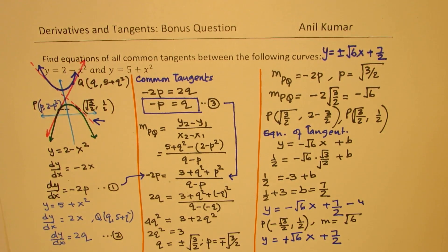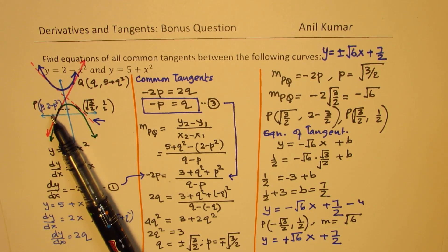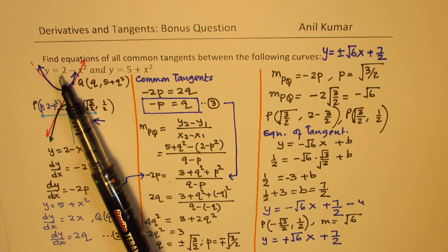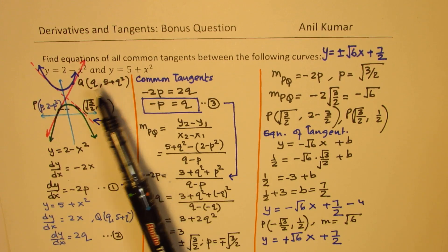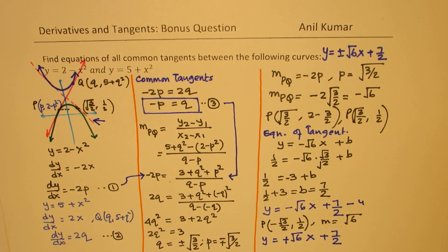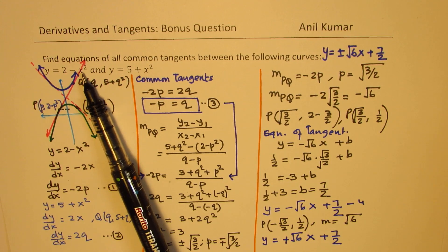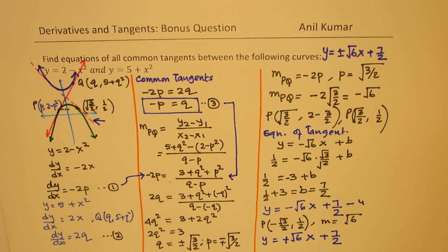That is how you solve it. To summarize: consider point P with x coordinate p and y equal to 2 minus p squared, and point Q with coordinates q and 5 plus q squared. Find the slope of the tangent line, equate it to the derivative, find the value of q, and proceed as shown. Feel free to write your comments and share your views. If you like and subscribe to my videos, that would be great. Thanks for your time and all the best.